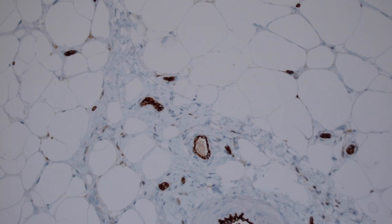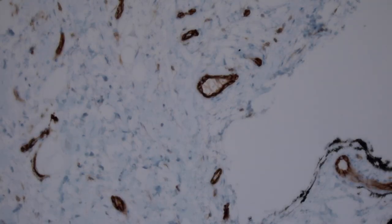And CD34 is another marker that does the same thing, it stains the lining cells of the vessels. And it will stain both lymphatics and arteries and veins. Endothelium of any kind will stain with this marker.